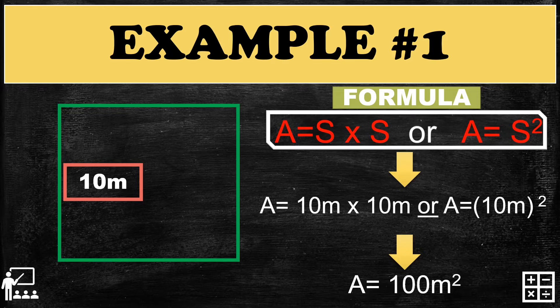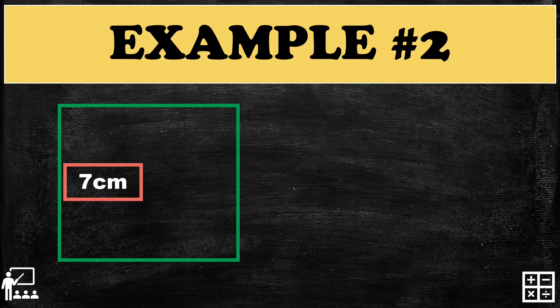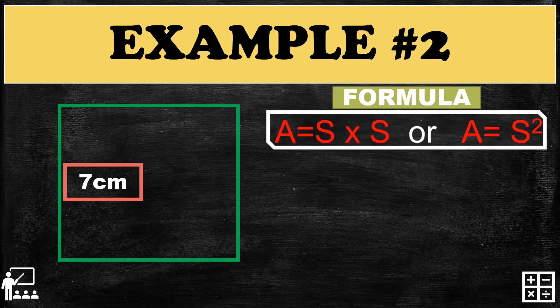Let's try another example. I have a square which measures 7 centimeters on one side. We are going to use the formula and substitute the measurement of the side, which is 7 centimeters.